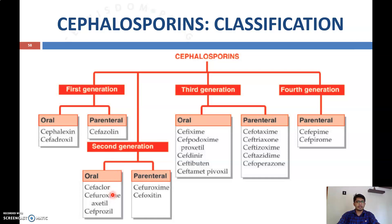Second-generation oral cephalosporins include cefaclor, cefuroxime axetil, and cefprozil. Parenteral second-generation cephalosporins include cefuroxime and cefoxitin.